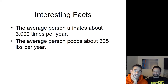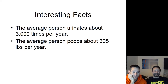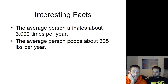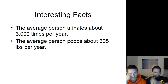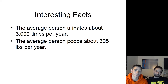Some interesting facts: the average person urinates about 3,000 times per year — that's roughly eight times a day. The average person also produces about 305 pounds of digestive waste per year, but remember that's the digestive system, not the excretory system.